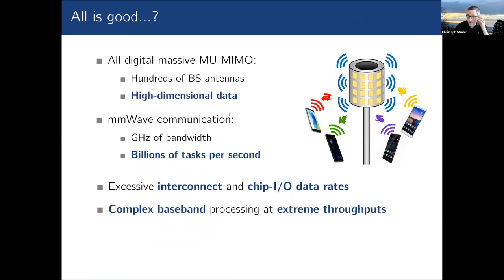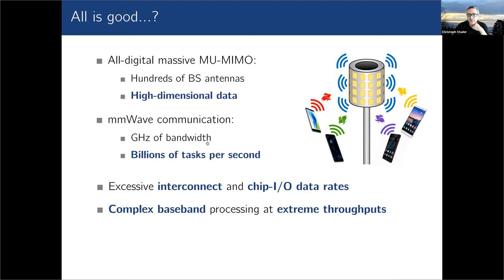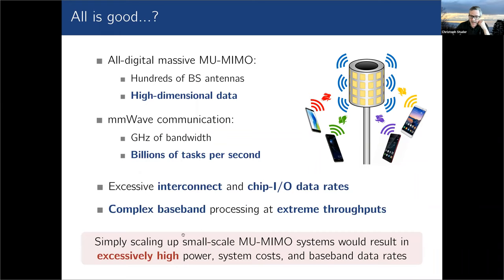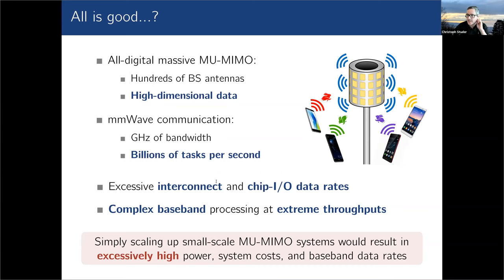However, it's not as easy as it sounds, which is why people discussed hybrid solutions. With massive MIMO you suddenly have high-dimensional data to process — hundreds of antennas means hundreds of dimensional problems. At millimeter wave with one or multiple gigahertz of bandwidth, you have to solve billions of high-dimensional tasks per second. Having ADCs and DACs on all antennas generates a huge amount of digital data that needs to flow into the processing chip. You cannot simply scale up what you would do in a small-scale multi-user MIMO system; that would result in excessively high power, system cost, and baseband data rates. You have to be smart when designing all-digital base station solutions for millimeter wave massive MIMO.